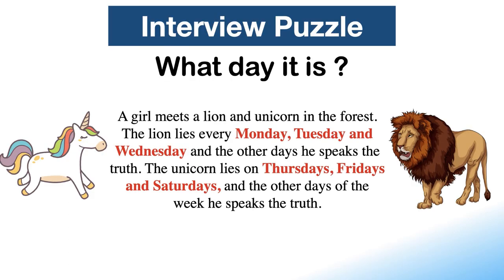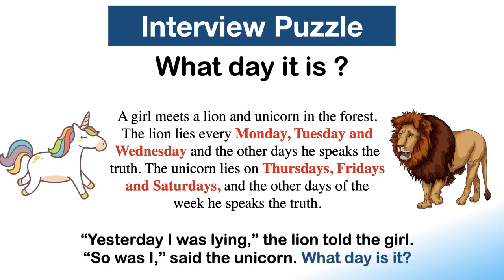A girl meets a lion and a unicorn in the forest. The lion lies every Monday, Tuesday, and Wednesday, and speaks the truth the other days. The unicorn lies on Thursdays, Fridays, and Saturdays, and speaks the truth the other days. The lion says: 'Yesterday I was lying.' The unicorn says: 'So was I.' What day is it?